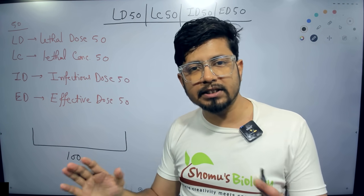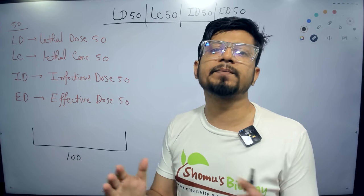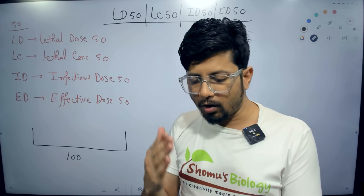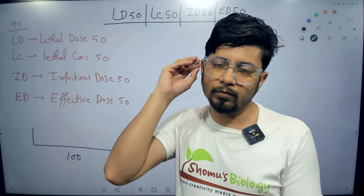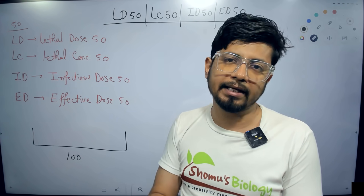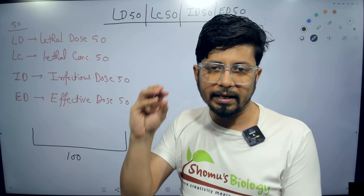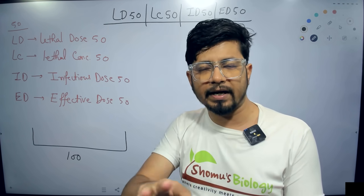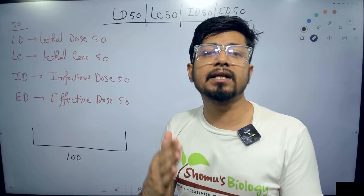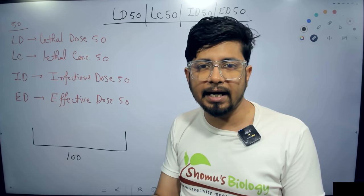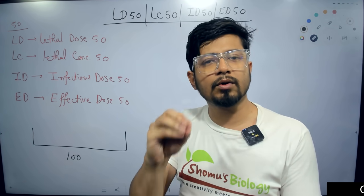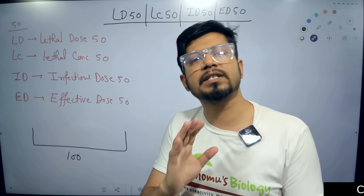We take a population of 100 people, and there is an experiment going on. When we give them drugs, chemicals, or microorganisms — bacteria, virus, or whatever — we introduce them to those 100 people. We want to know how many of them are getting killed.